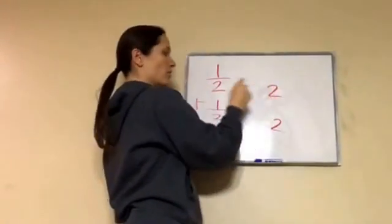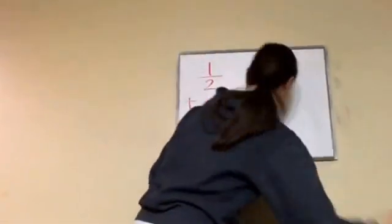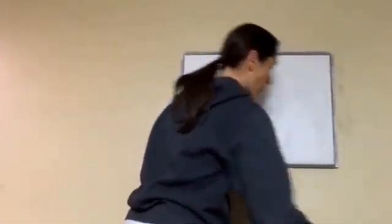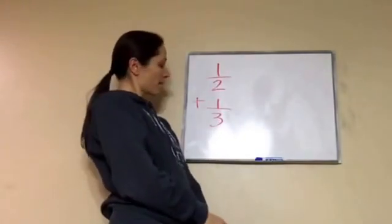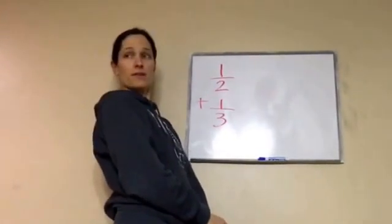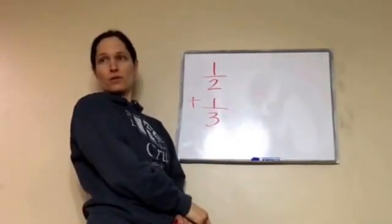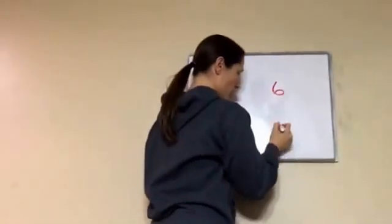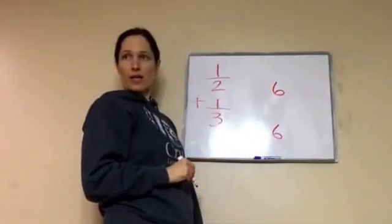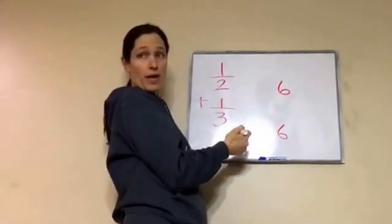So, can you come up with a number that both of these will go into? Yes, what number will both 2 and 3 go into? 6, very good. 2 will go into 6 and 3 will go into 6, right? So, let's try to make this our common denominator.